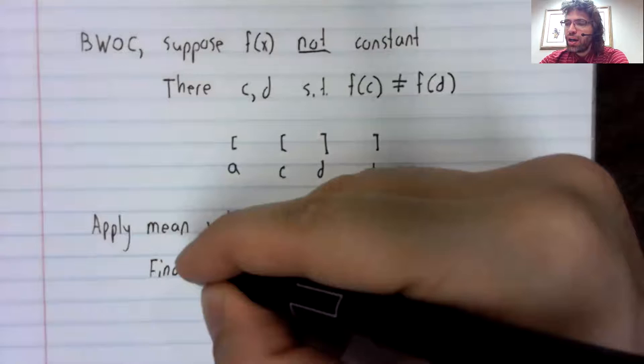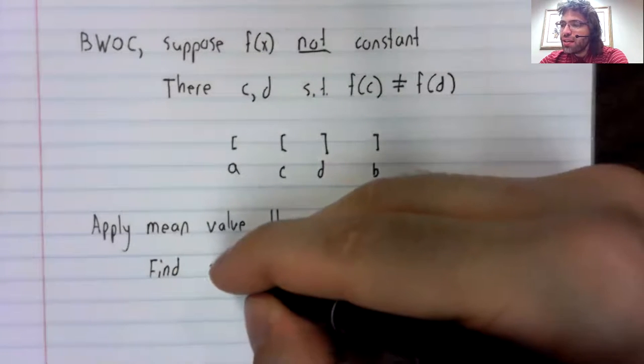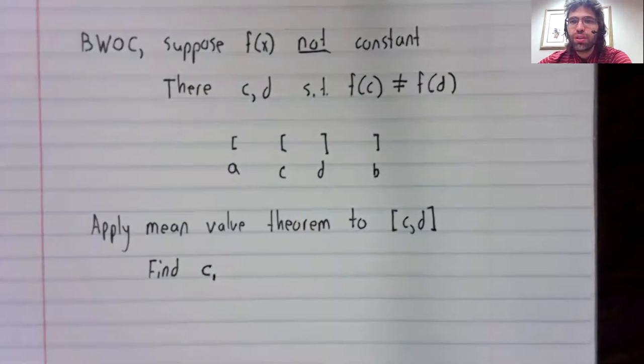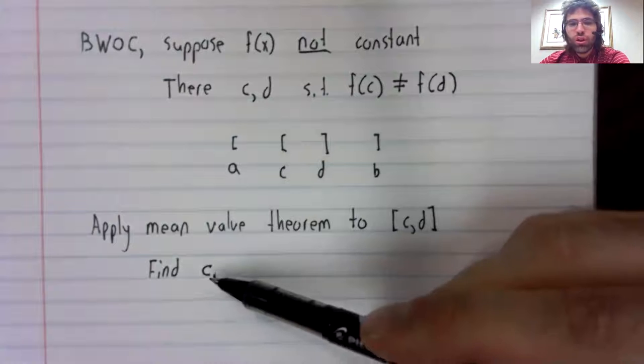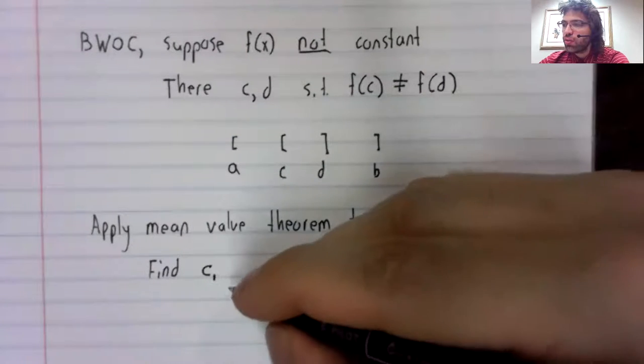I'd rather not use e because that is a standard constant 2.71 something. So let's call it c₁ in this interval.